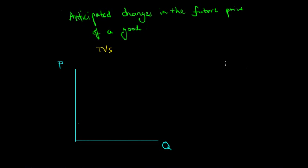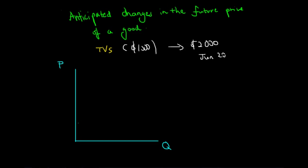Assume that the average TV costs $1,000 at the moment. There has been a change in supply side conditions so that consumers anticipate the average price of a TV will cost $2,000 from June 2014. Currently it is December 2013, so in half a year's time the average price of the TV is anticipated to have increased to $2,000.